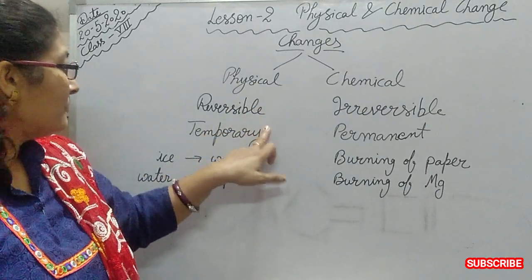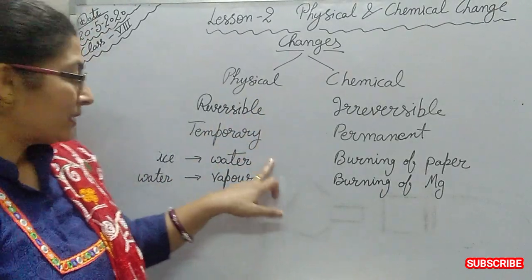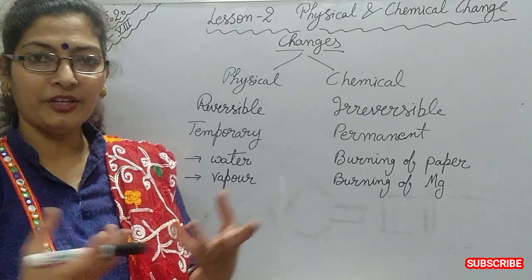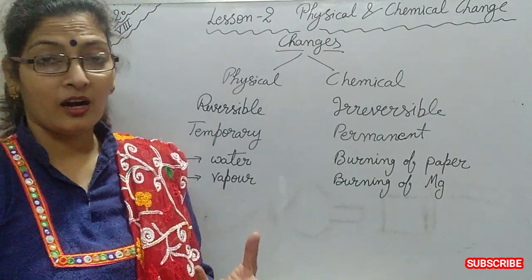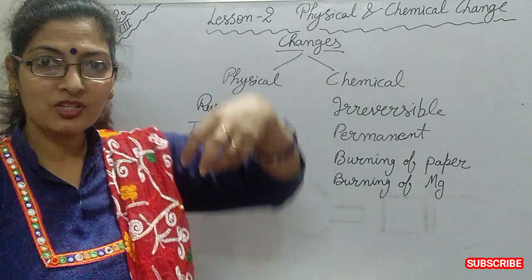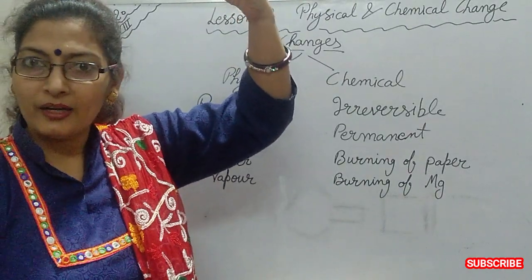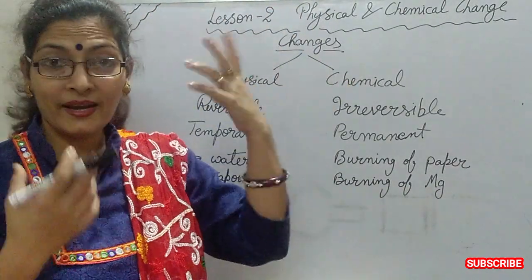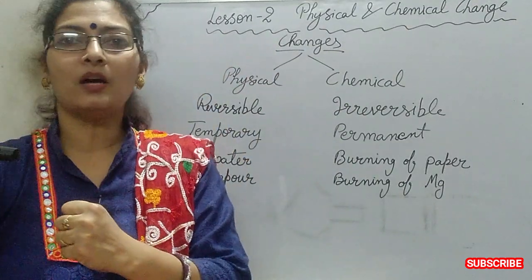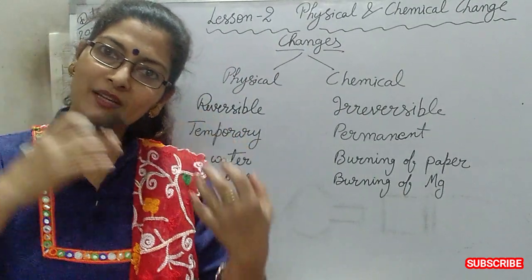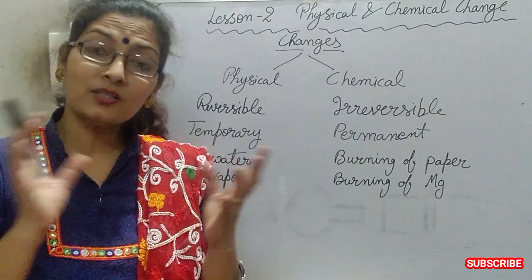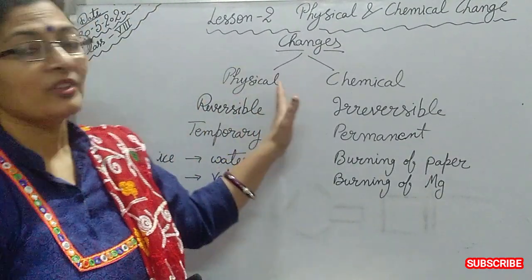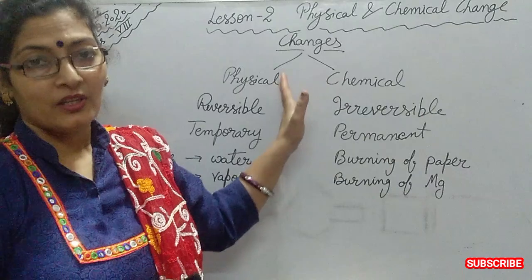Suppose we have water and we heat it. At the boiling point it starts to evaporate, and water changes to vapors. When we cool down those vapors, we can get water back. This means it is a reversible change, and this is the physical change.